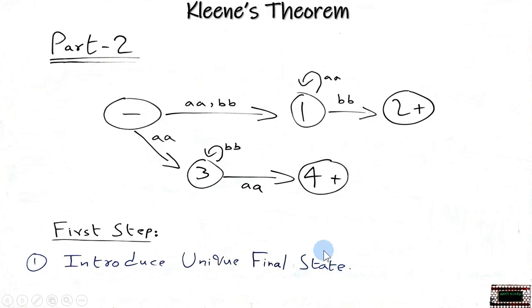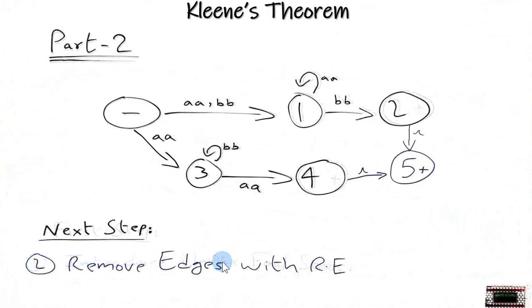So the first step is to introduce a unique final state. We can see that there are two final states here: the second is state two and the fourth is state four. So we have introduced state five, the unique final state, by doing some null transitions. This is called a null string.